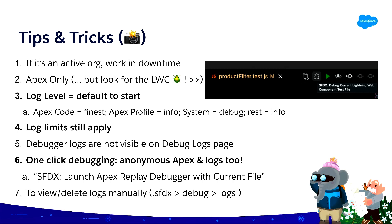We'll hopefully have a blog coming out soon diving into these tips. The three I want to highlight are the bolded ones. For log levels, the dev console level we called out earlier is plenty to get you started — it sets Apex code to finest, Apex profile to info, system to debug, the rest just at info. If you need more, you can adjust manually. However, log limits still apply, so set log levels only to what you need — you might find you get to the end of the log and still don't have the information you're looking for. For one-click debugging, it's also available for anonymous Apex and directly from log files by right-clicking either file type and selecting 'Launch Apex Replay Debugger with current file.'